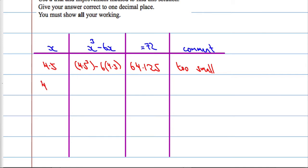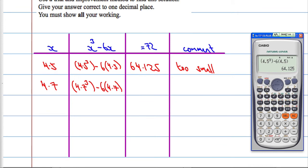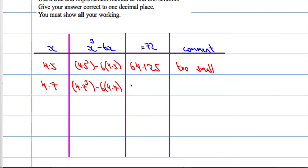I'm going to choose 4.7. On the calculator, we do 4.7 cubed minus 6 times 4.7. If you still have the previous expression on your calculator display, all you need to do is go back and change the 5 to a 7. The result is 75.623. How does that compare to 72? Well, it's too big.